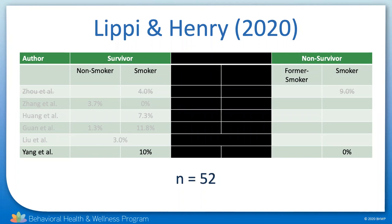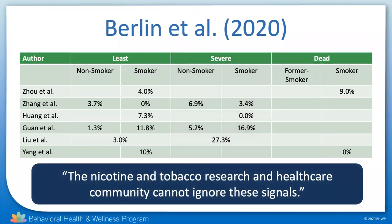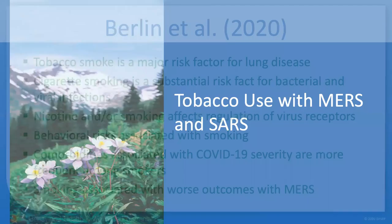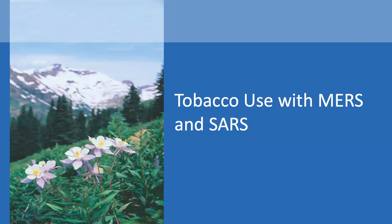That is almost a verbatim reversal of the first paper's conclusion. Writing at a somewhat later date, Berlin et al. was able to look at both of these studies, and BHWP has to agree with their conclusions: 'The nicotine and tobacco research and healthcare community — to which BHWP would add public health as well — cannot ignore these signals, however mixed and disputed they may be right now.' Berlin et al. note that among the reasons we share worries with other public health officials, professors, and providers is that we have seen tobacco play a role in increasing risk with other infections, and in respiratory infections in particular. But simply insisting that there must be a connection isn't enough. Can we learn anything by looking at the role of tobacco use with other coronaviruses?